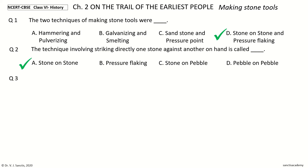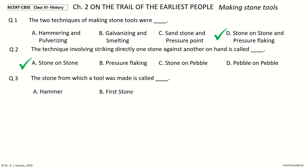Question 3: The stone from which a tool was made is called dash. The options are: hammer, first stone, core, base. And the answer is core.